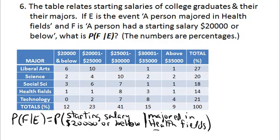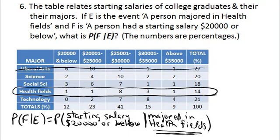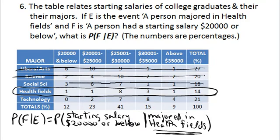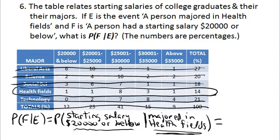This is a conditional probability problem. We're given that the person majored in health fields, so the only thing we're interested in in this chart is the health field row. We could care less about any other rows or the totals. From the health care fields, we want to know the probability that someone started out at $20,000 and below. That would be 1 out of a total of 14.